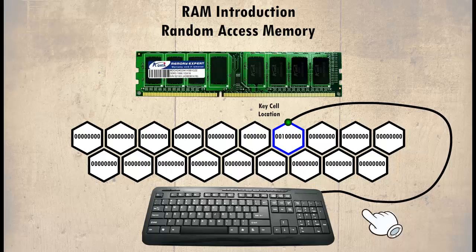With RAM, any data — no matter where it is — can be accessed; that is why it is called random. The data cannot be stored as one single piece; it is separated or split into smaller sections and stored randomly in the memory.